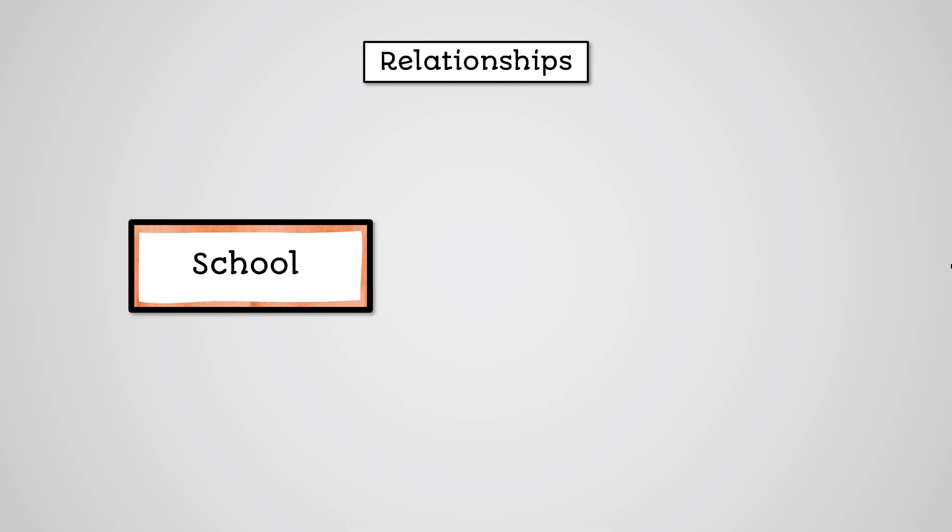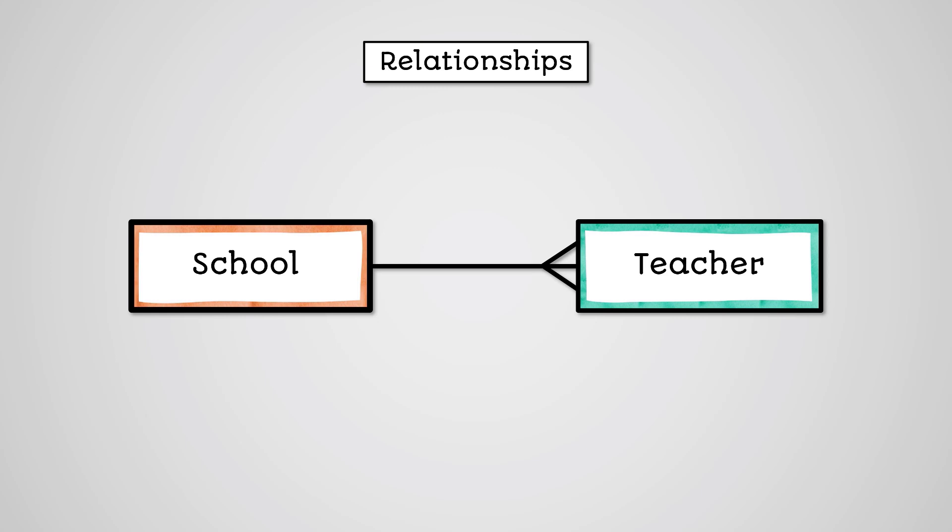Now consider a school and its teachers. One school has many teachers, but each teacher belongs to one school. This is a one-to-many relationship and is shown by the crows feet. These are on the many side of the relationship.